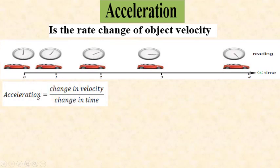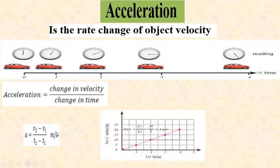The acceleration formula is: change in velocity divided by change in time, so acceleration equals v2 minus v1 over t2 minus t1 — that is, final velocity minus initial velocity. This graph represents the relation between velocity and time in this case.